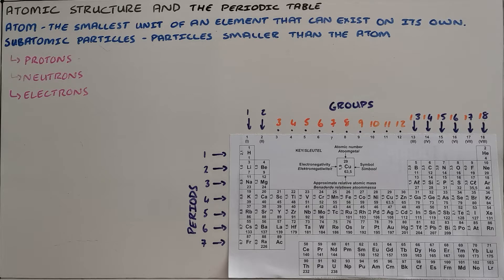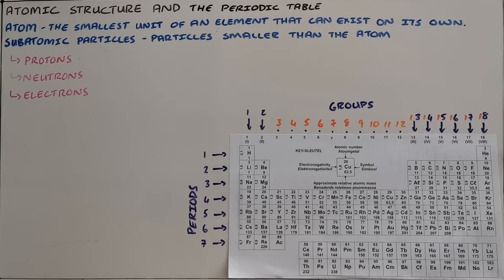There are three subatomic particles that we commonly find inside the atom. These are the protons, which are positively charged particles found inside the nucleus; the neutrons, which are neutral particles also found inside the nucleus; and the electrons, which are the negatively charged particles found in the energy levels around the nucleus.